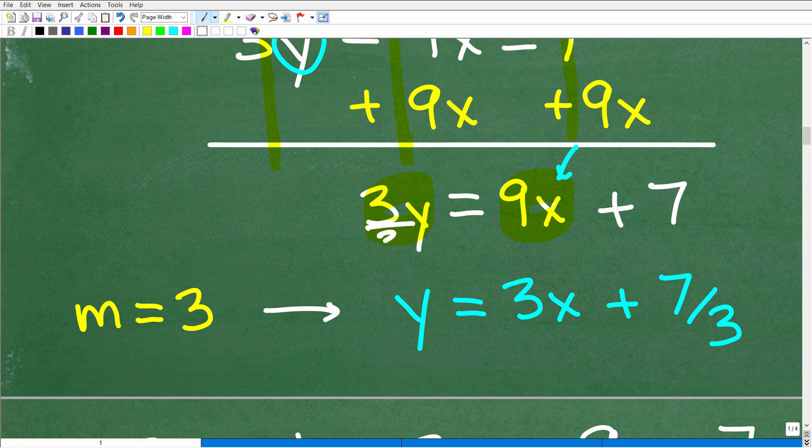So to fix this up, all I have to do is divide everything by 3. So 3 divided by 3 is 1y or y. 9 divided by 3, of course, is 3 or 3x. And then here we have 7 thirds. So we are done. And what we just did here is write that linear equation into y equals mx plus b form, slope intercept form.